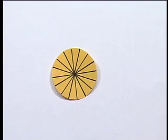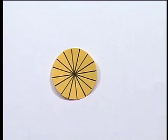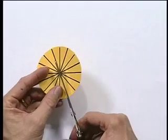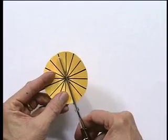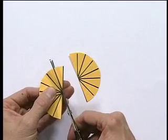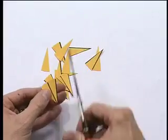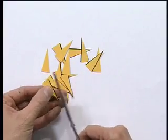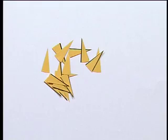Next, as with the triangle, I need a pair of scissors. And what I'm going to do now is I'm going to cut along each of these black lines. One more cut. That's my circle cut up into wedges.